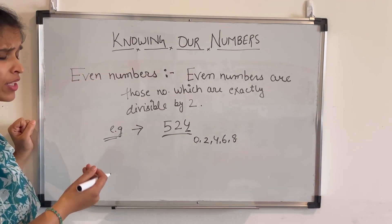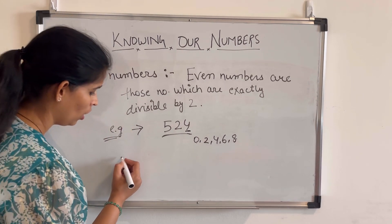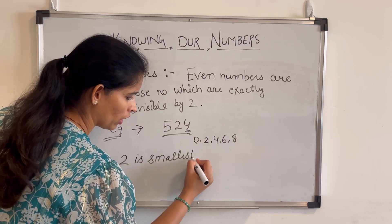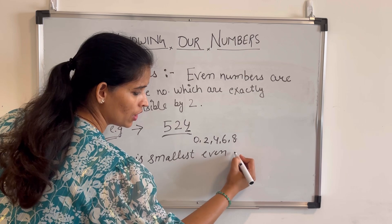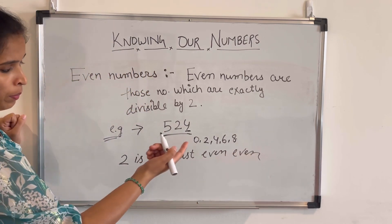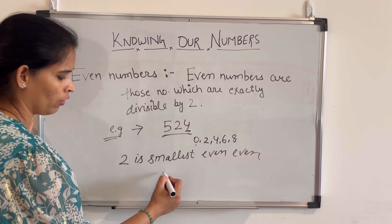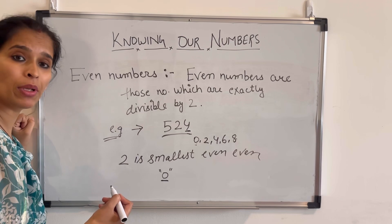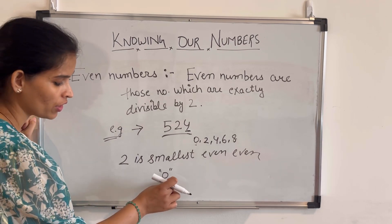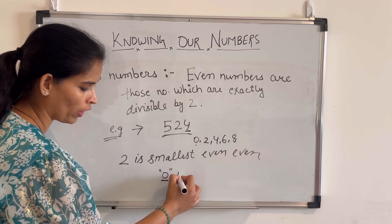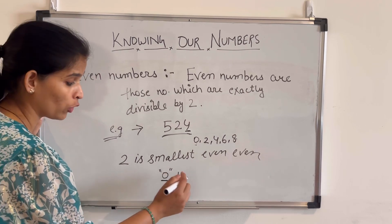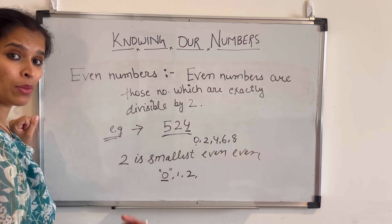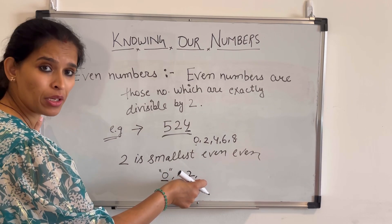The smallest even number is 2. You might ask why not 0 — because 0 is not divisible by 2 in this context, so we don't consider it. Starting from 1: 1 is not divisible by 2, but 2 is completely divisible by 2, so 2 is the smallest even number. There is no largest even number.